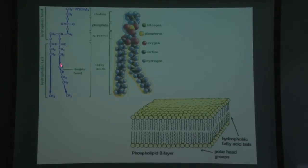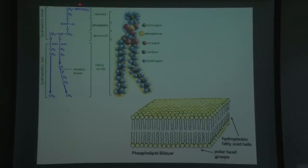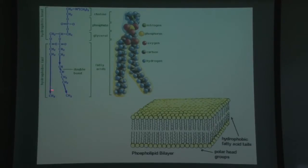Looking at the structure, the top part is charged — it's N+. If something is charged, it's going to like water, so that part is hydrophilic. The tail is hydrophobic because it's a very long carbon chain, meaning it's a nonpolar region. So the phospholipid has both a polar and a nonpolar region, which is very advantageous in forming a lipid bilayer.